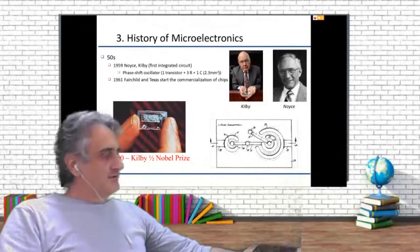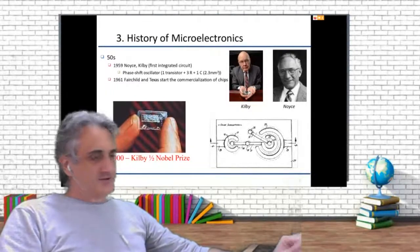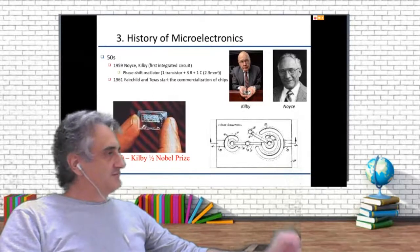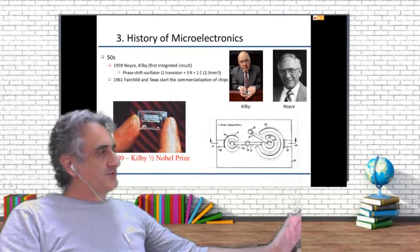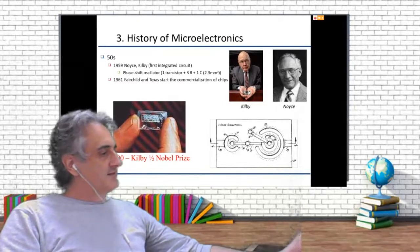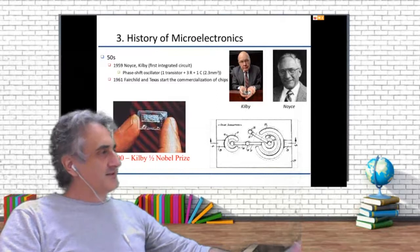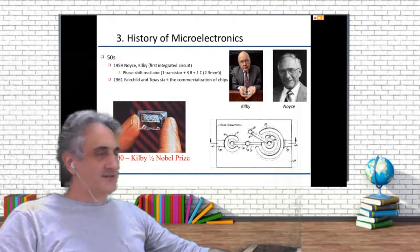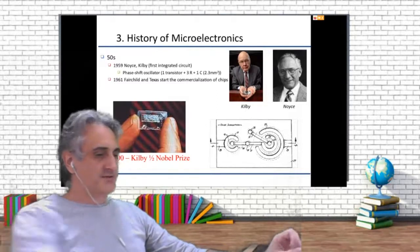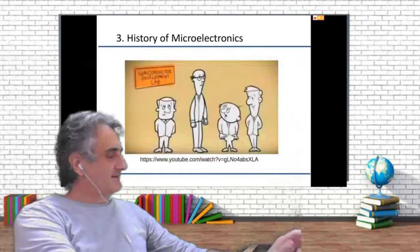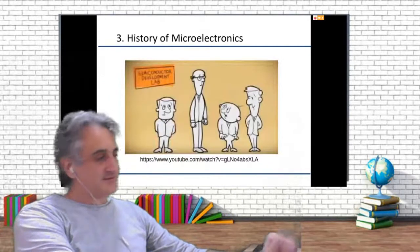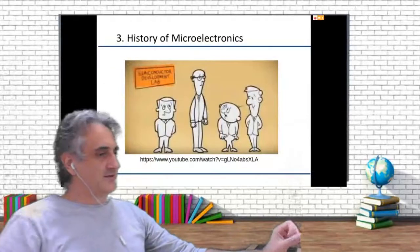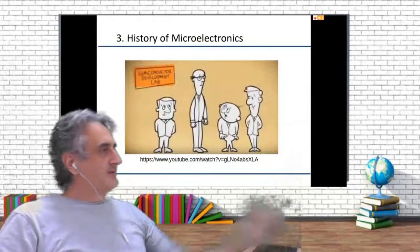What we are using now is Noyce's process, done by other people. And then, just two years after that, Fairchild and Texas Instruments started selling integrated circuits like what we are seeing today.